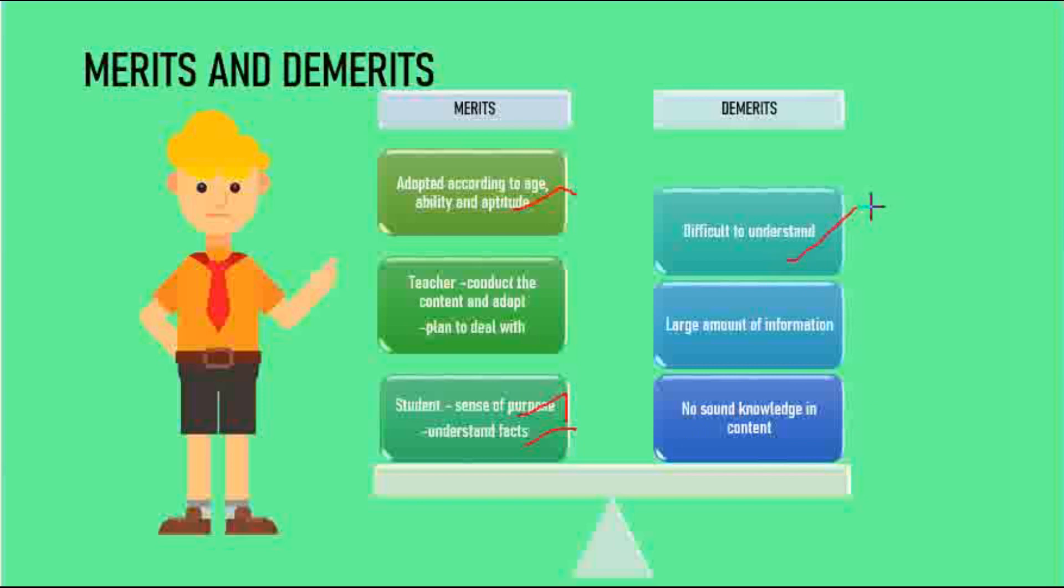Coming to the demerits, it is difficult to understand. If you want to cover a topic, there is a large amount of information. There will be difficult concepts and large amounts of information, so not all students can easily grasp that. It does not give a thorough knowledge of the content, and no sound knowledge of the content can be expected from the student. That is one of the demerits of this topical approach.